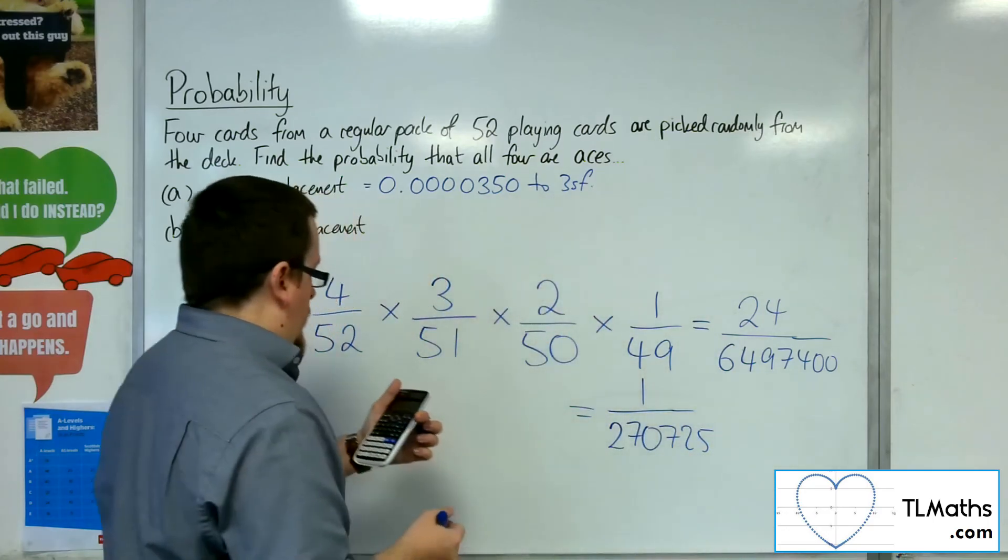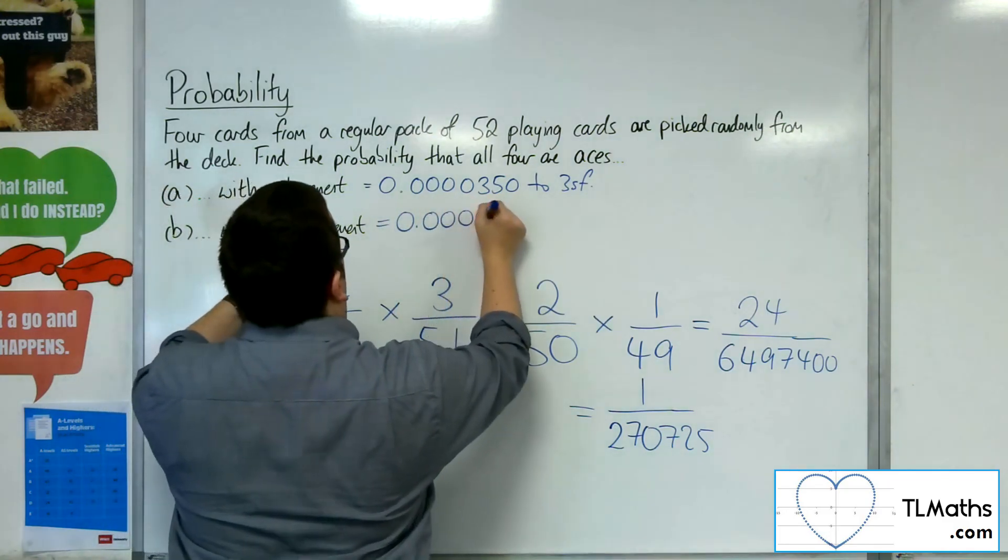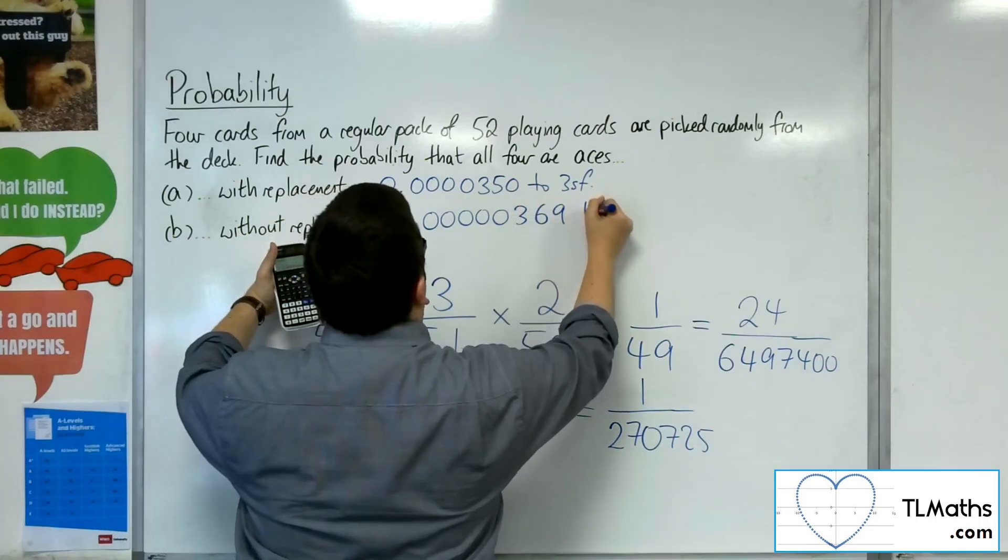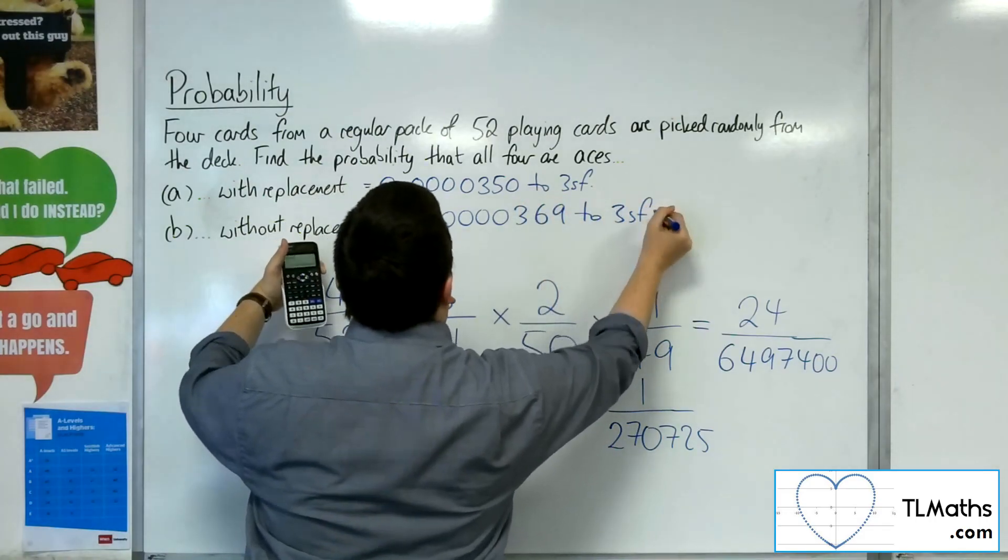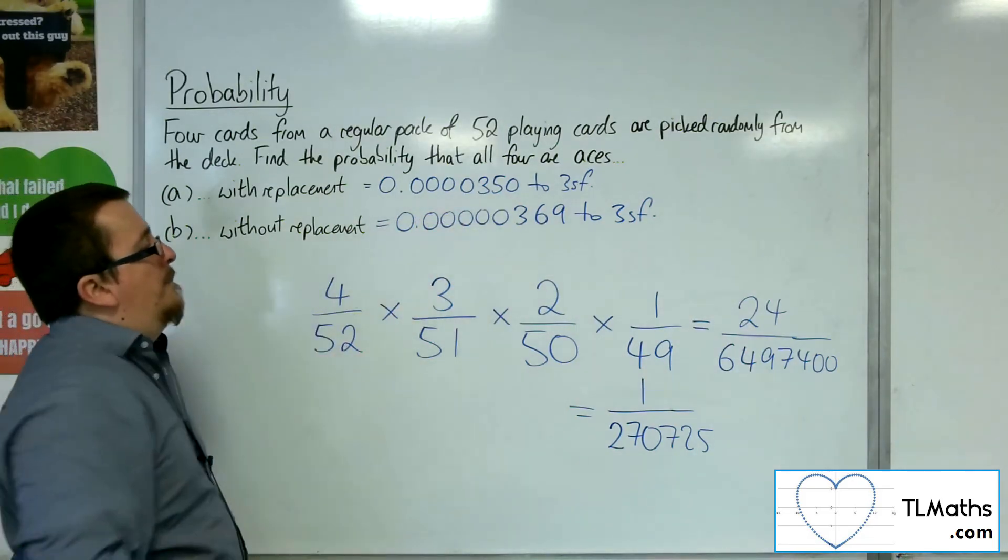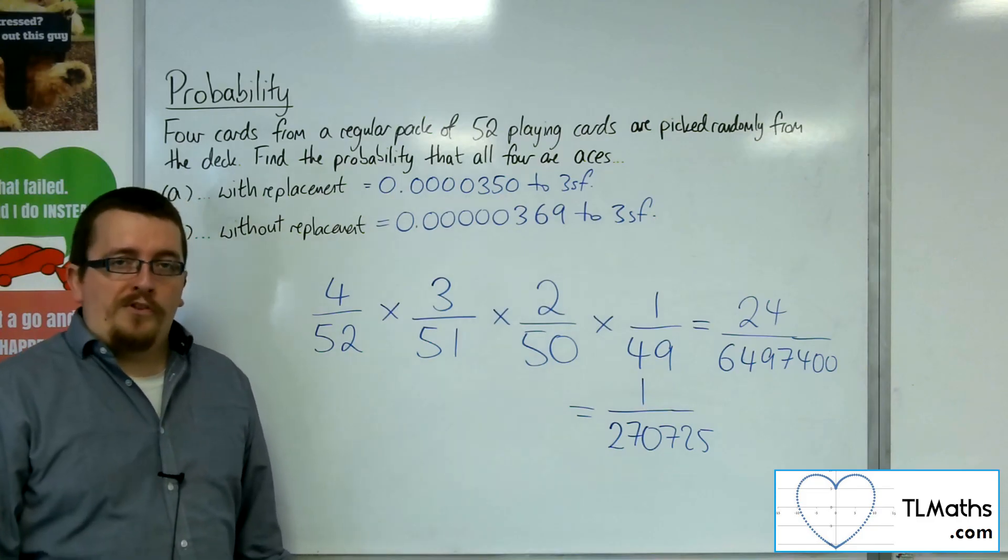Which is actually equal to 0.0000369 to three significant figures. So even smaller, almost a factor of 10 smaller than the previous result.